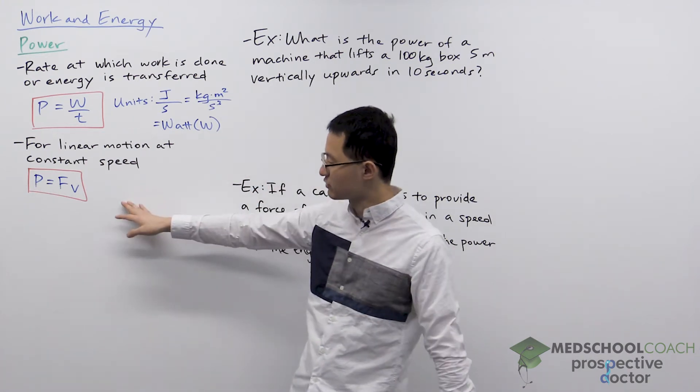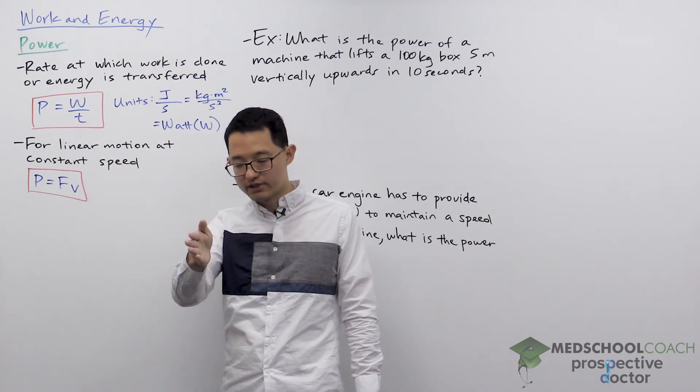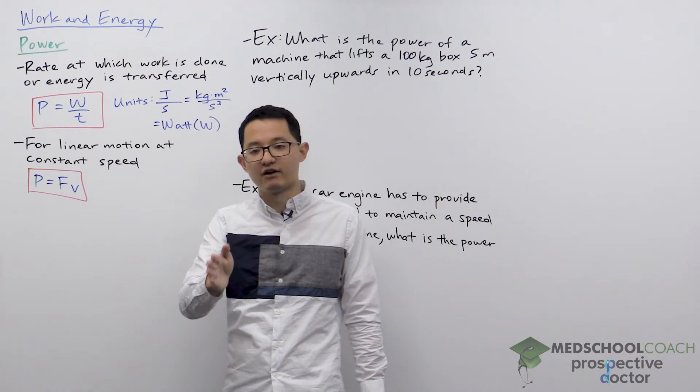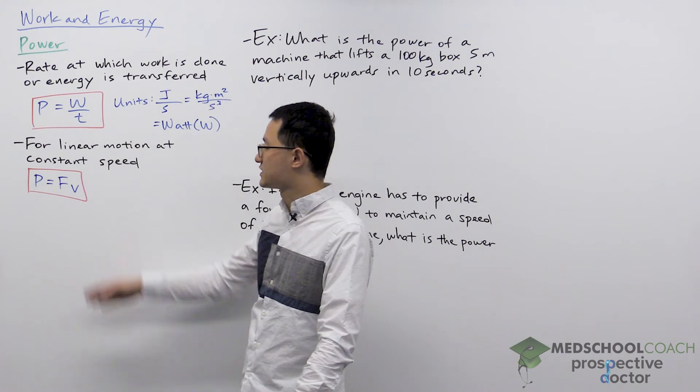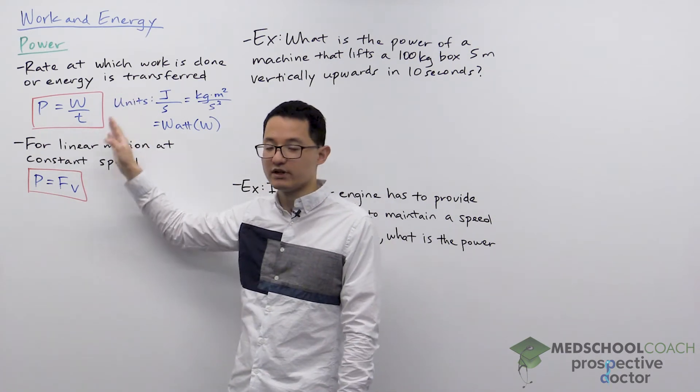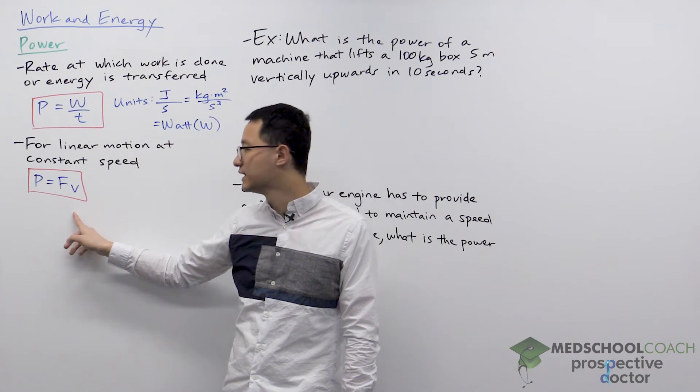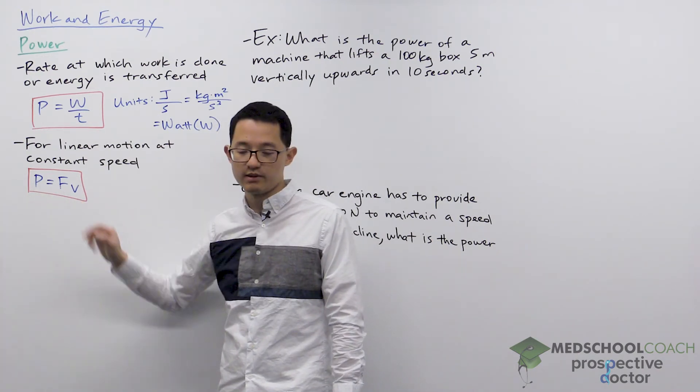And the reason why this works is because work is Fd cosine theta. But if your object is moving linearly, then the force and the displacement are in the same direction, so cosine theta is one. So you just have force times displacement over time, and displacement over time is velocity. So just another equation to calculate the power, force times velocity.